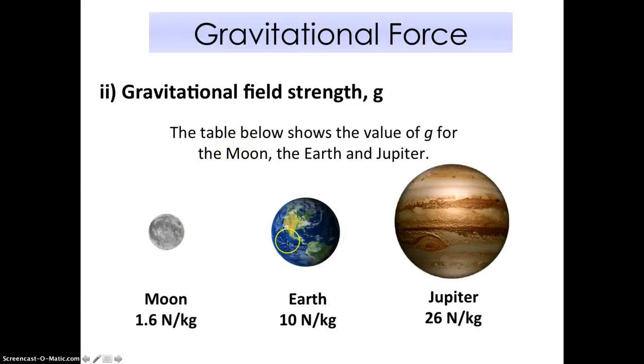So here we have three planets. Moon, the Earth. Okay, Moon is not really a planet. So never mind. The Moon, the Earth, and Jupiter. So the value of the gravitational field strength is also labelled here. For the Moon, because it's small, it's only 1.6. For the Earth, it's rather big. We have 10 Newton per kg. And for Jupiter, which is super huge, we actually have it at 26. So based on the size of the planet, you actually have different gravitational field strength.